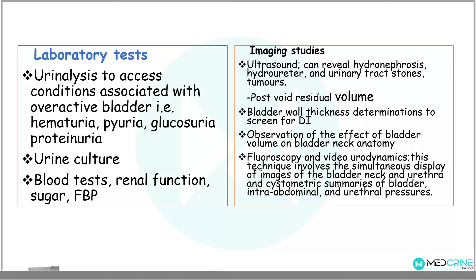Laboratory tests required in urinary incontinence examination include urinalysis to assess for associated problems such as hematuria, pyuria, or glycosuria; urine culture; blood tests; and renal function tests. Imaging studies are also important. An ultrasound study can reveal hydronephrosis, hydroureter, urinary tract stones, or tumors. When performing ultrasound, you can also determine the post-void residual volume of urine.